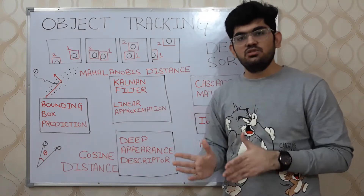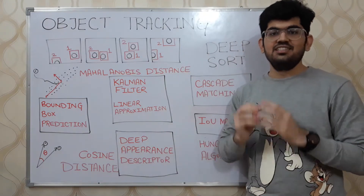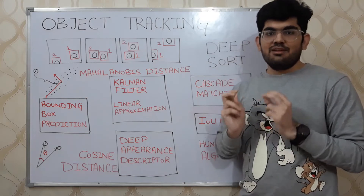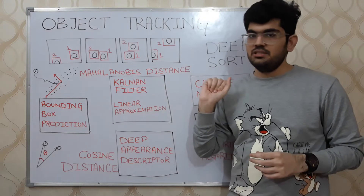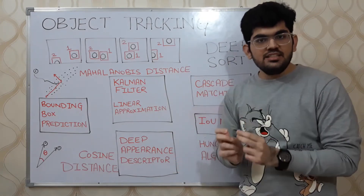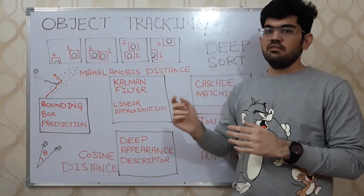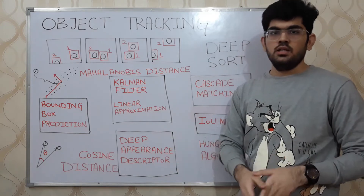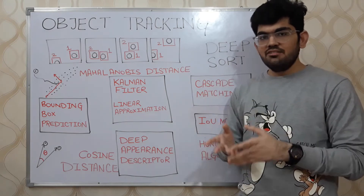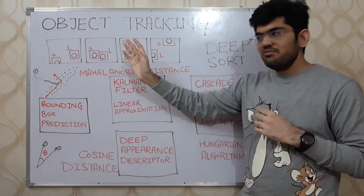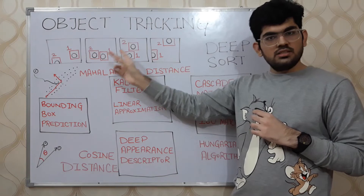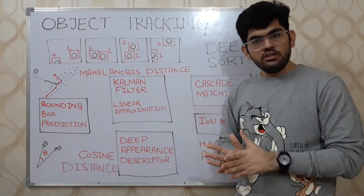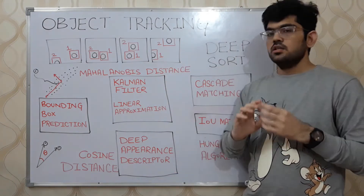After generating the bounding box predictions, we get to the next step: the Kalman filter. Kalman filter is a very broad topic, but briefly, it is a linear approximation. Its role here is to predict the future location of a detected object. Using these future predictions we can determine whether the object we were tracking is the same object or not. Along with that, predictions also help us deal with the problem of occlusion — where two objects overlap and the one in front occludes the one behind it.